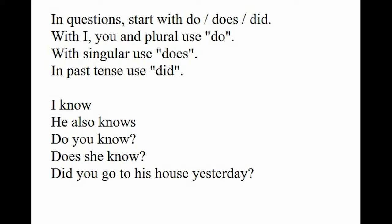I know. He also knows — why do we use 'knows' here? Because 'he' is singular. So when it is singular, we use 's' or 'es' with the word. Do you know? Here we use 'do' because 'you' is there. Does she know? Here we use 'does' because 'she' is singular. Did you go to his house yesterday? Here we use 'did' because this is past tense.